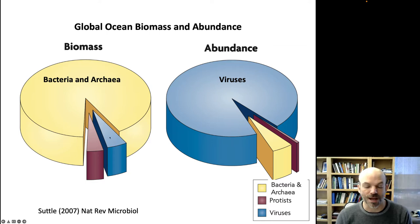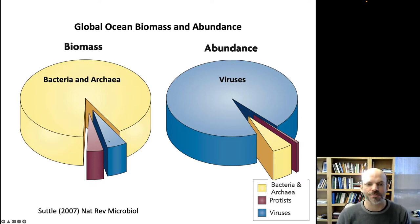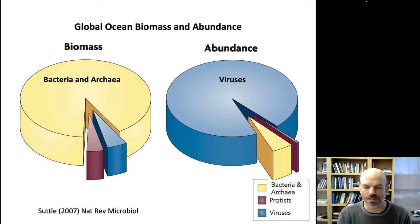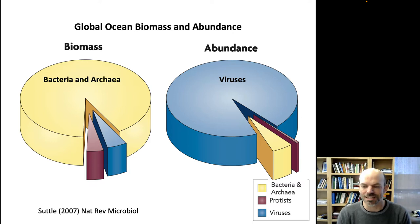And viruses, although by mass, according to this estimate, there are actually more grams of viruses in the ocean than there are grams of microbial eukaryotes, which is pretty impressive. This is in the ocean because the ocean is nice and homogeneous, so if you do a count of one milliliter you can nicely extrapolate to the rest of the liters of the ocean. It's a lot harder to do that with soil or other kinds of environments, and also the ocean is really big.